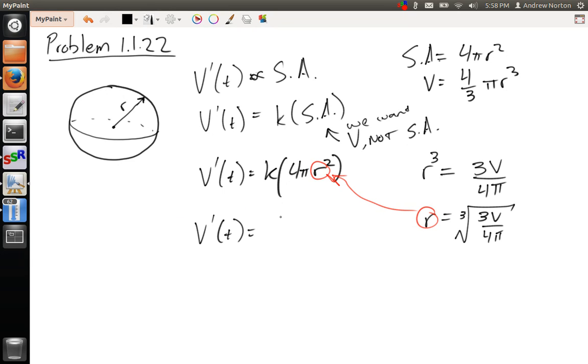So V'(t) is equal to k times 4π. I'm going to write this as (3V/4π) to the 2/3 power.